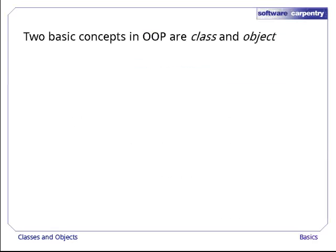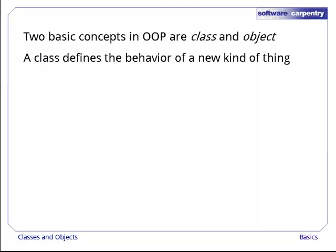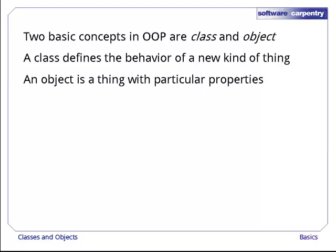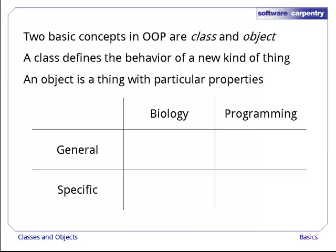The two basic concepts in Object-Oriented Programming are the class and the object. A class defines a new kind of thing, more specifically how those things can behave. An object is then a particular thing with a particular set of properties that behaves the way its class tells it to. This probably seems hopelessly vague, so let's look at an analogy with biology.